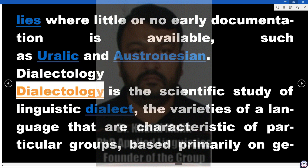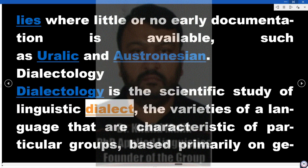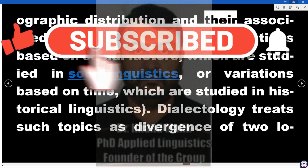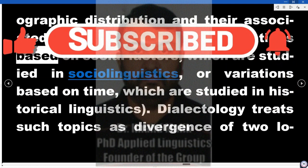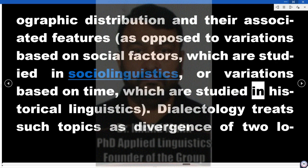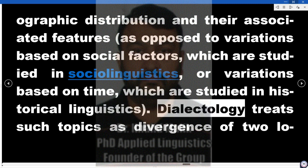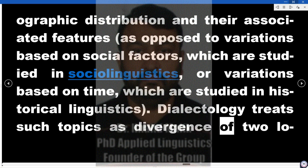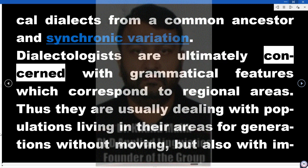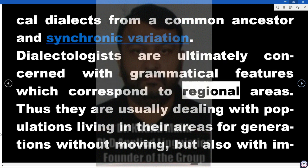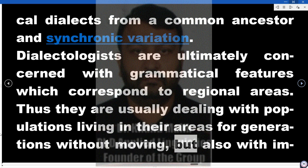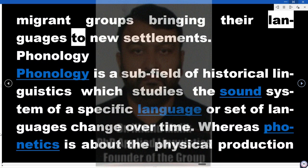Dialectology is the scientific study of linguistic dialect — the varieties of a language that are characteristic of particular groups, based primarily on geographic distribution and their associated features, as opposed to variations based on social factors, which are studied in sociolinguistics, or variations based on time, which are studied in historical linguistics. Dialectology treats topics such as divergence of two local dialects from a common ancestor and synchronic variation. Dialectologists are ultimately concerned with grammatical features which correspond to regional areas, dealing with populations living in their areas for generations, but also with immigrant groups bringing their languages to new settlements.